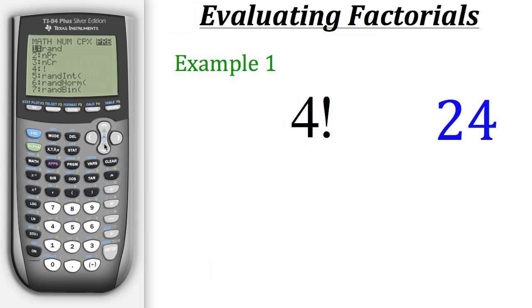And then the fourth option down is the factorial symbol. So now we have 4 factorial in our entry, so we can just hit Enter, giving us that same result of 24.